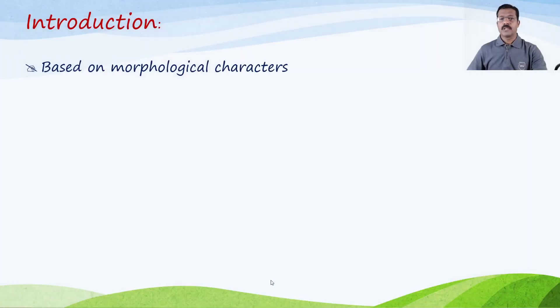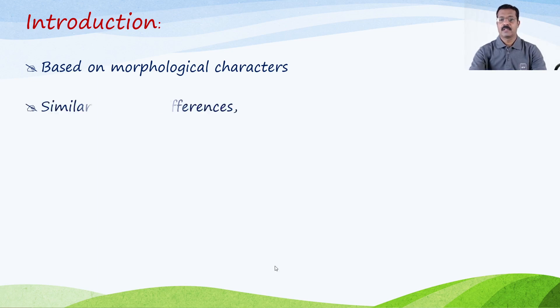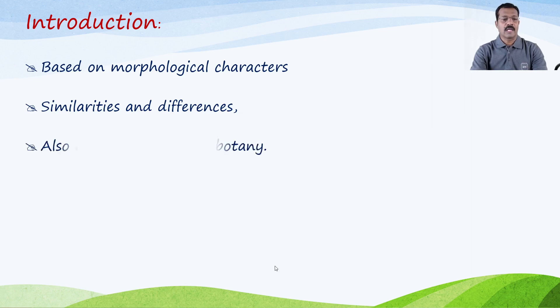The classification in taxonomy is based on morphological characters — that means characters which are easily observable without any dissection — including such similarities and differences in plants at cellular as well as molecular level. Taxonomy is also called systematic botany.